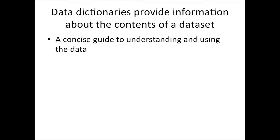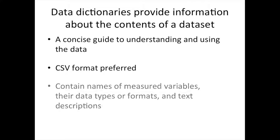Ideally, all AgData Commons records for datasets and databases should include or point to a data dictionary. We prefer that these data dictionaries are in CSV format so that they are machine-readable. If you prefer to prepare it as a Word doc or PDF, we recommend embedding a data dictionary table in your document that can be easily extracted.